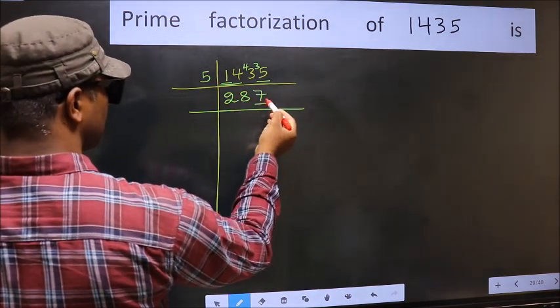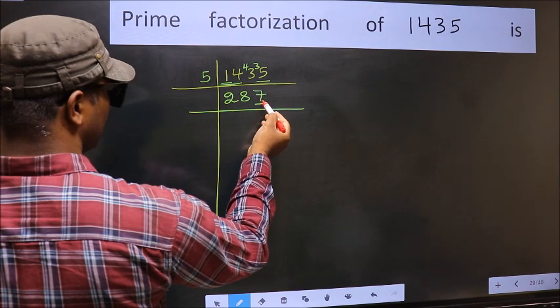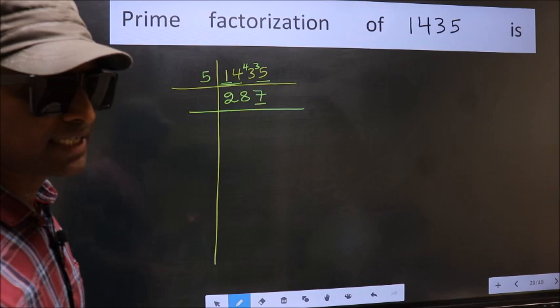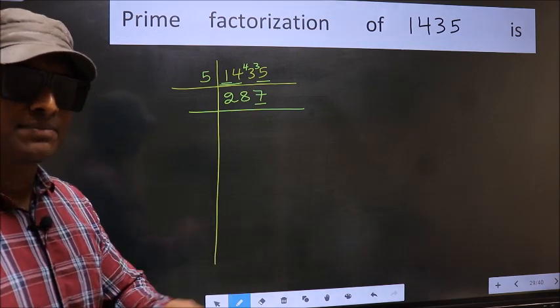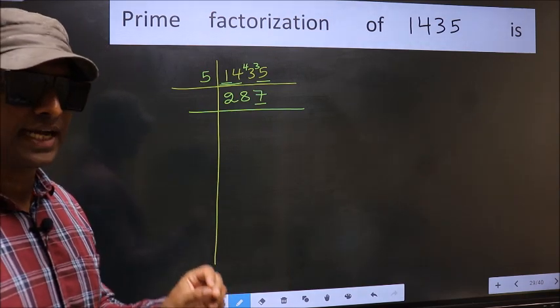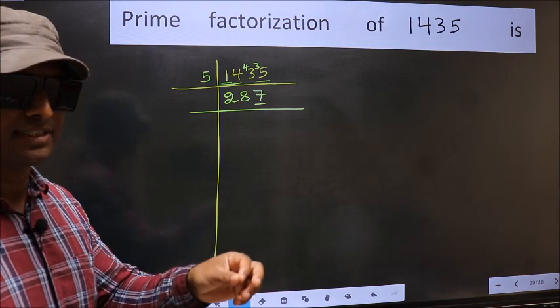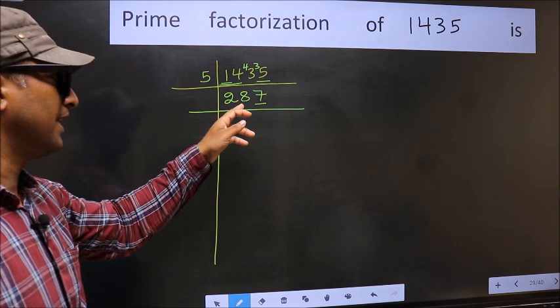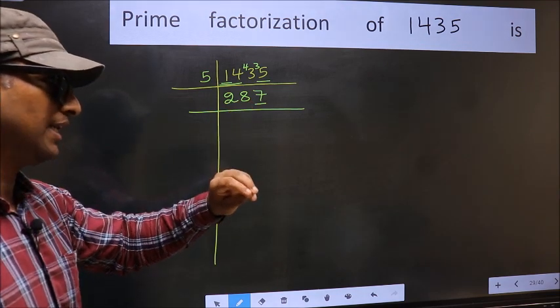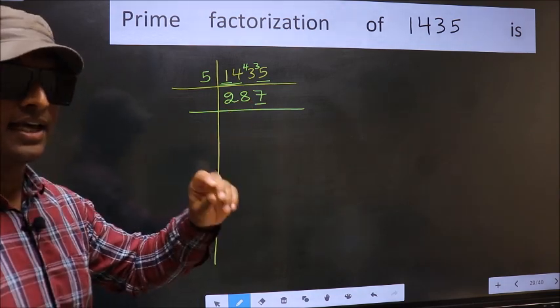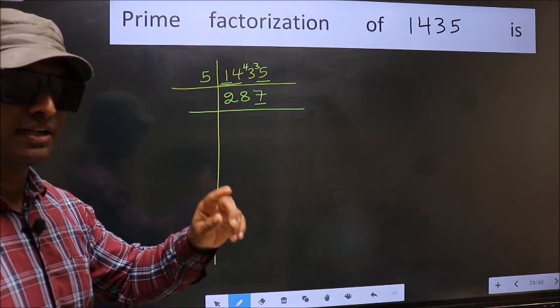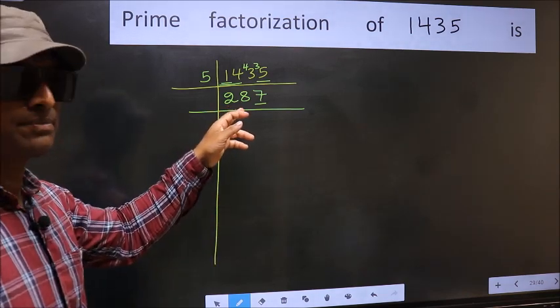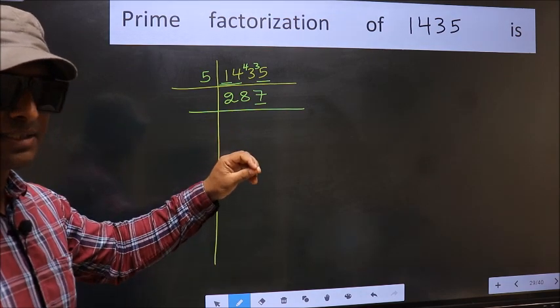Now the last digit is 7, not a 1, so this is not divisible by 2. Next prime number is 3. To check divisibility by 3, we should add the digits. What I mean is 2 plus 8 plus 7, we get 17. And 17 is not divisible by 3, so this number is also not divisible by 3.